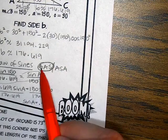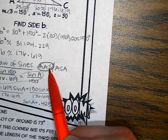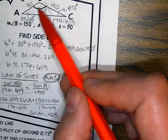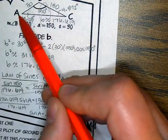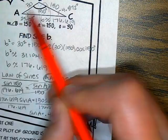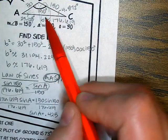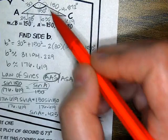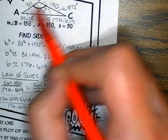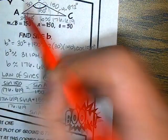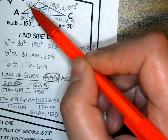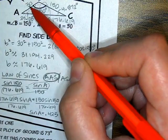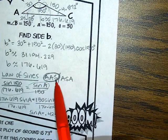Angle-angle-side means you have two angles and a side that's not in between them. What we were using is angle A and angle B, and side B is not in between them. If you had angle-side-angle, you would have two angles and the side that is in between them. That's the difference: two angles with side not in between them vs. two angles with side in between them.